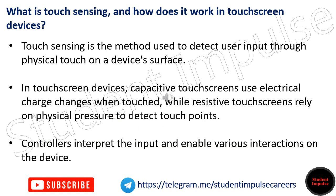What is touch sensing and how does it work in touch screen devices? Touch sensing is the method used to detect user input through physical touch on a device's surface. In touch screen devices, capacitive touch screens use electrical charge changes when touched, while resistive touch screens rely on physical pressure to detect touch points. Controllers interpret the input and enable various interactions on the device.